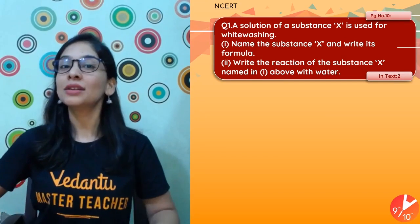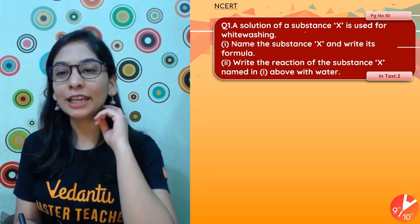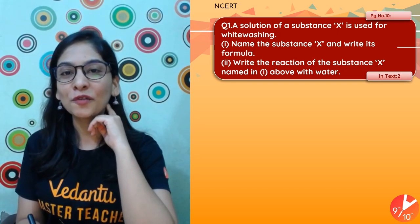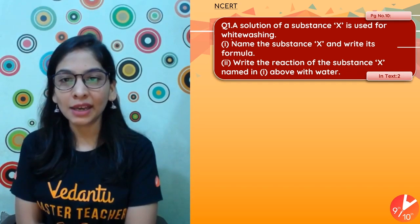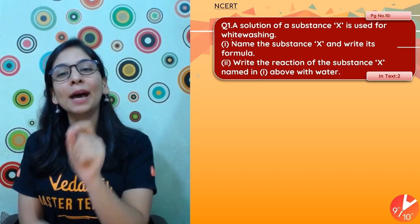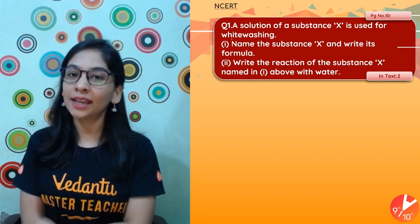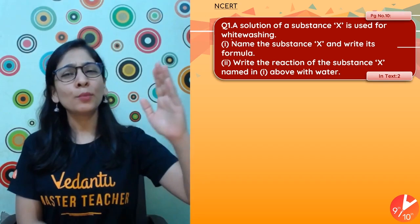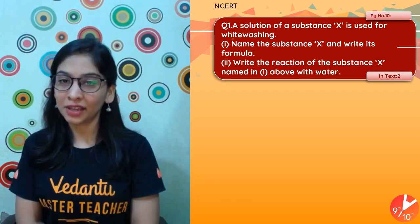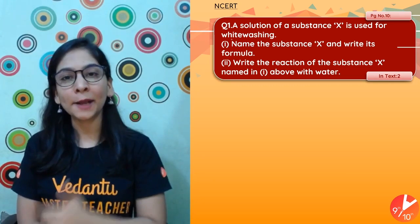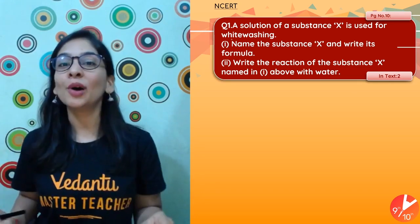Let's discuss Question 1 from page number 10. The question is: a solution of substance X is used for whitewashing. I have also covered this in our Umang series, so please do watch Umang series 2.0 if you haven't. That said, let me help you how to write it properly — you can also consider this a revision.